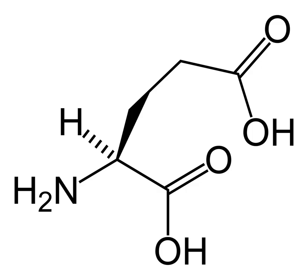Mammalian ionotropic glutamate receptor subunits and their genes are categorized under ionotropic types. Mammalian metabotropic glutamate receptors are all named mGluR and are further broken down into three groups. In other non-mammalian organisms, the classification and subunit composition of glutamate receptors is different.